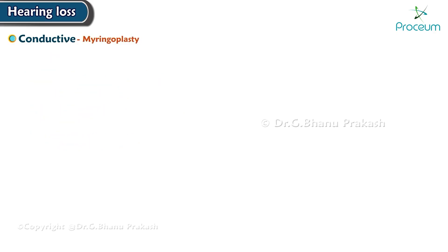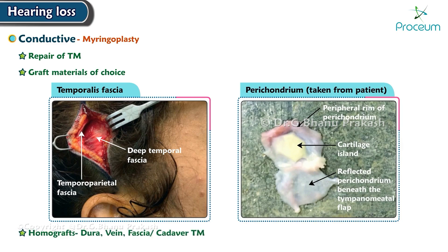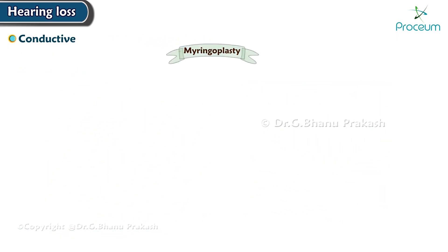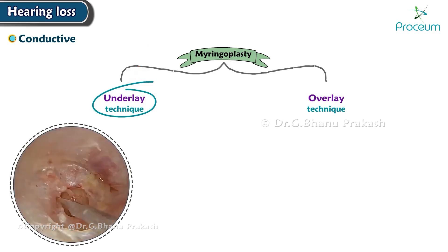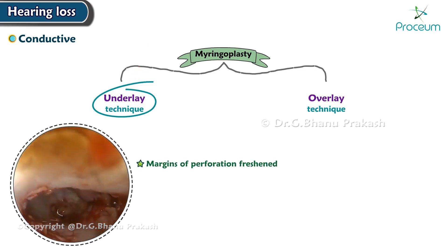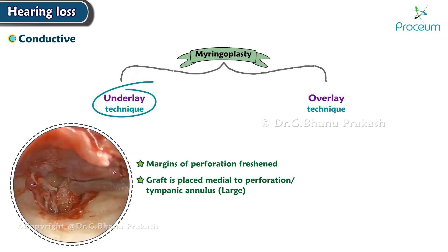Myringoplasty is the repair of the tympanic membrane. Graft materials of choice are temporalis fascia or perichondrium taken from the patient. Sometimes homografts such as dura, vein fascia, or cadaver tympanic membrane are also used. The repair can be done by two techniques: the underlay or the overlay. In the underlay technique, margins of perforation are freshened and the graft is placed medial to the perforation or tympanic annulus if large.